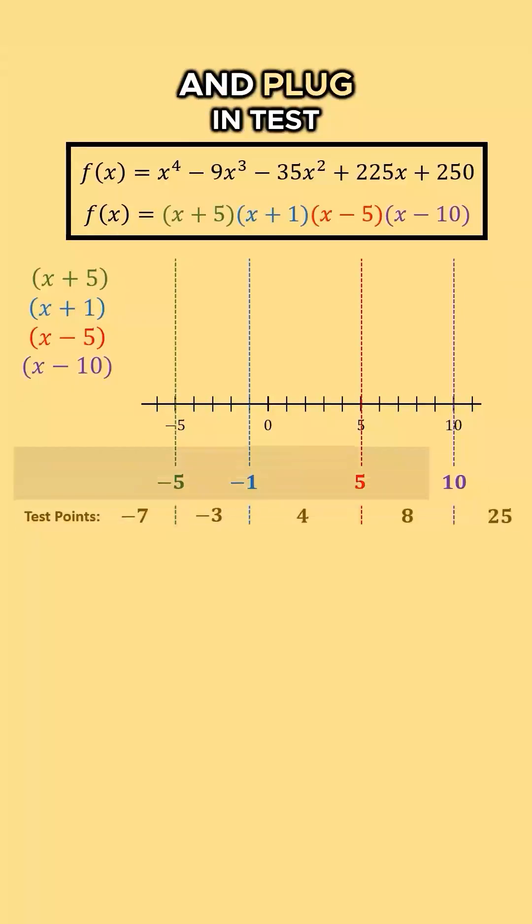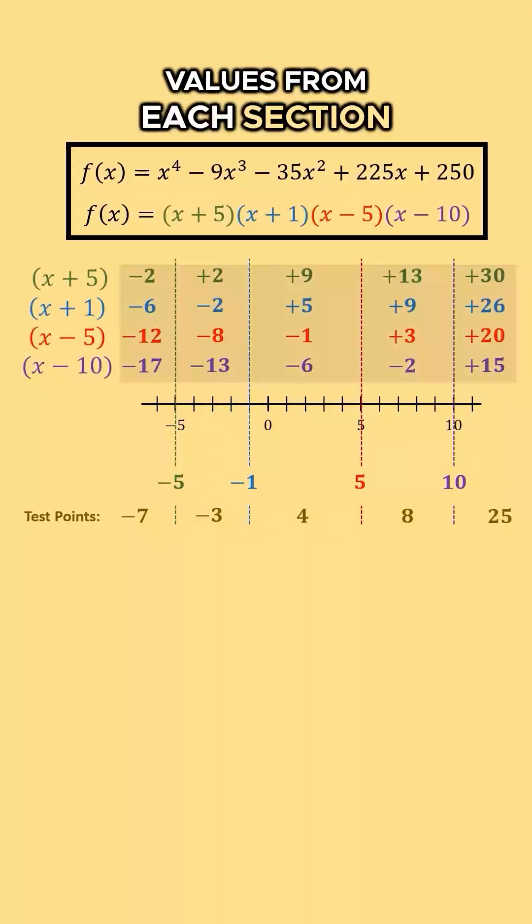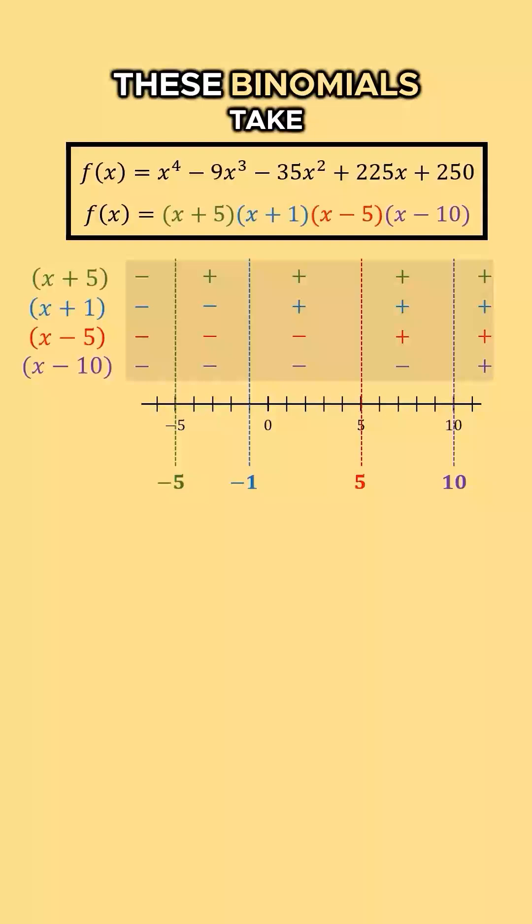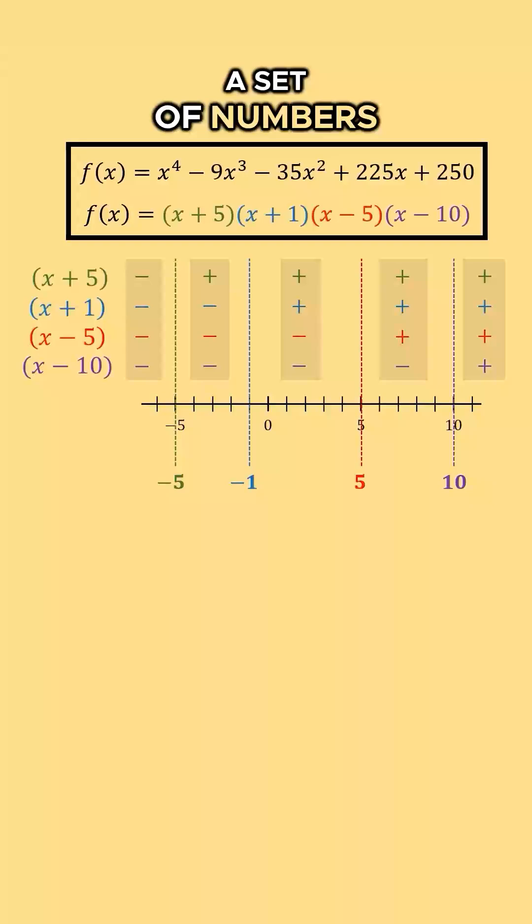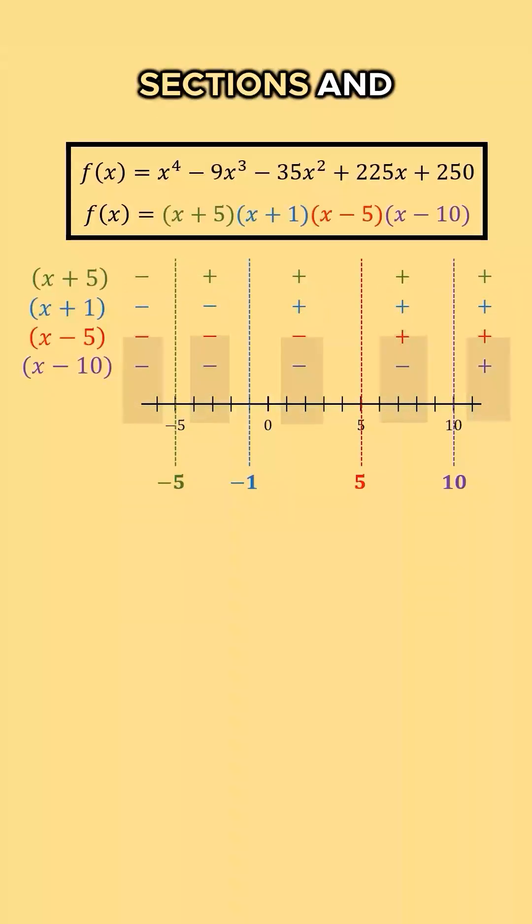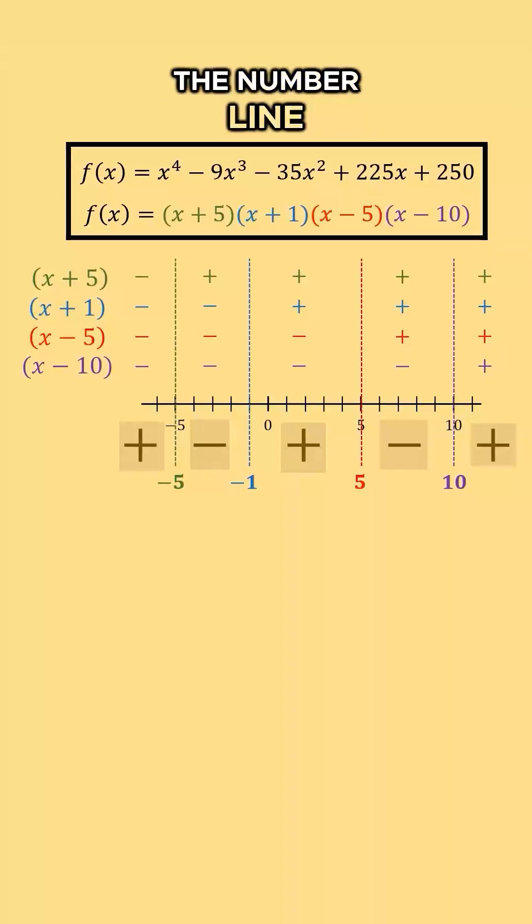You then pick and plug in test values from each section to determine the signs these binomials take on within each interval. We then imagine multiplying a set of numbers with the signs from each one of these sections, and the sign of the result that we get is going to go below the number line.